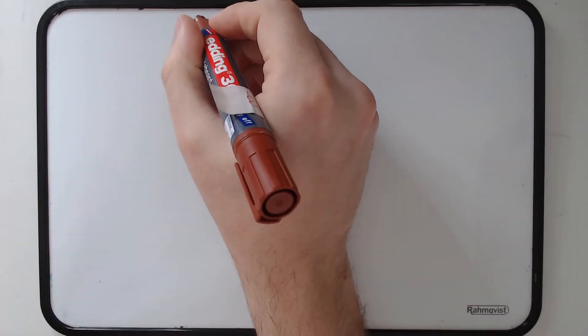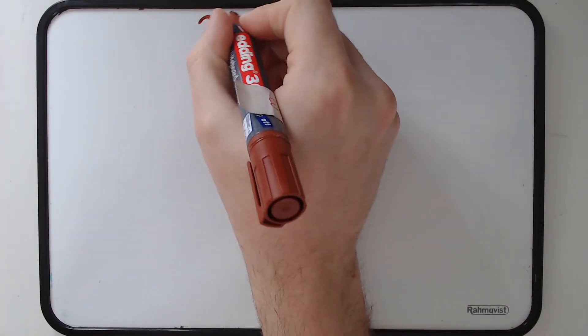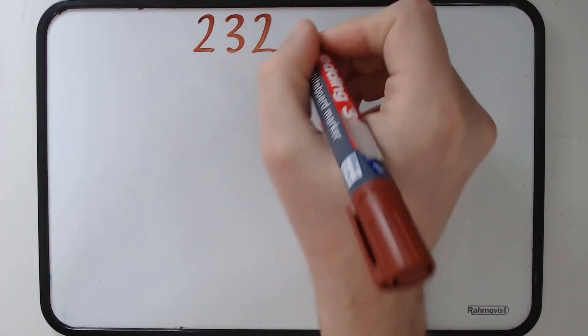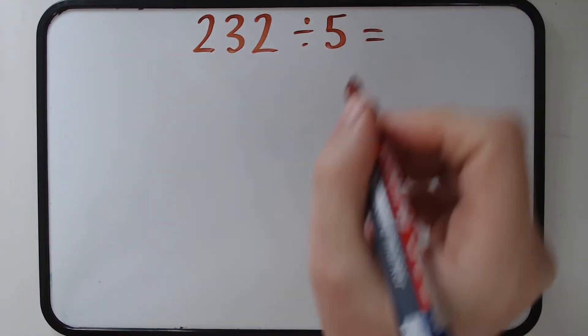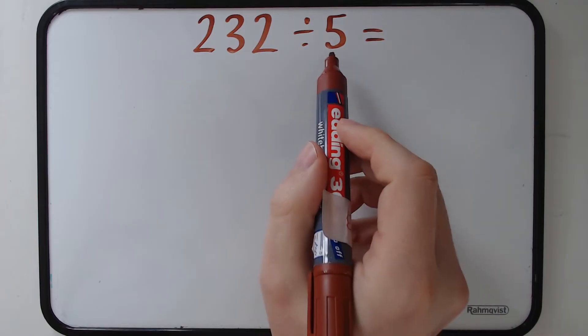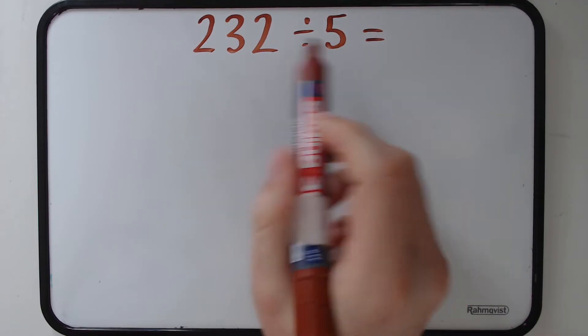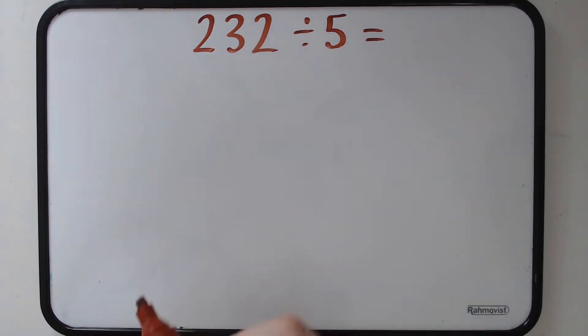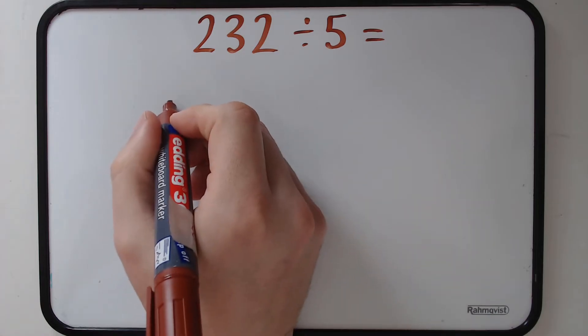In the next example, we're going to still divide by a single digit but this time have a remainder. So we're going to do 232 divided by 5. Now automatically we know there's going to be a remainder because we know 5 will not go into a number that ends in 2. At least not completely.